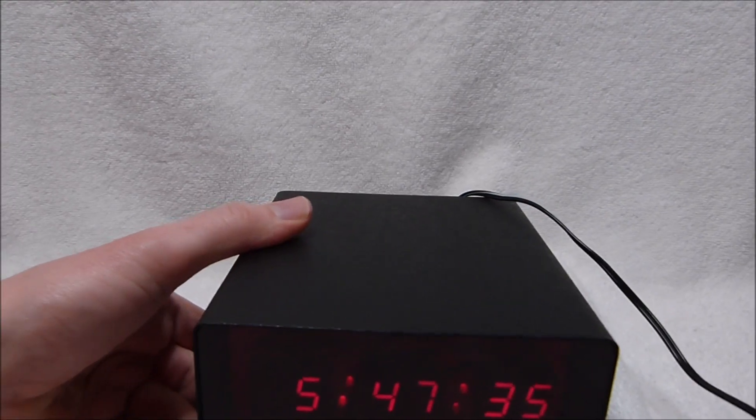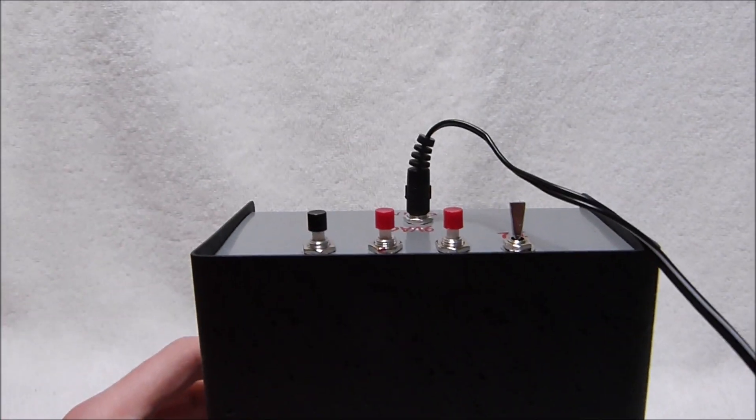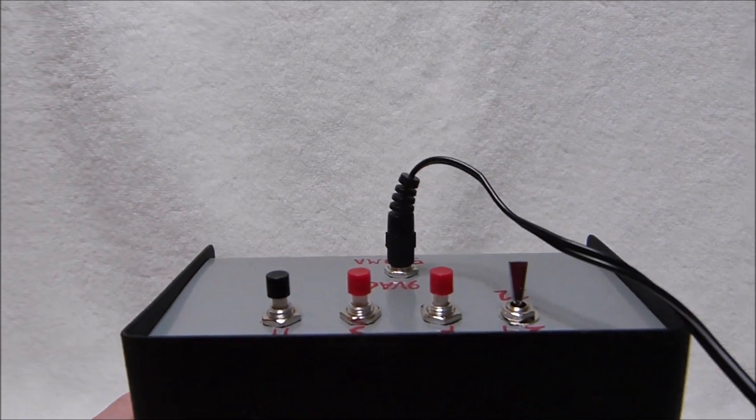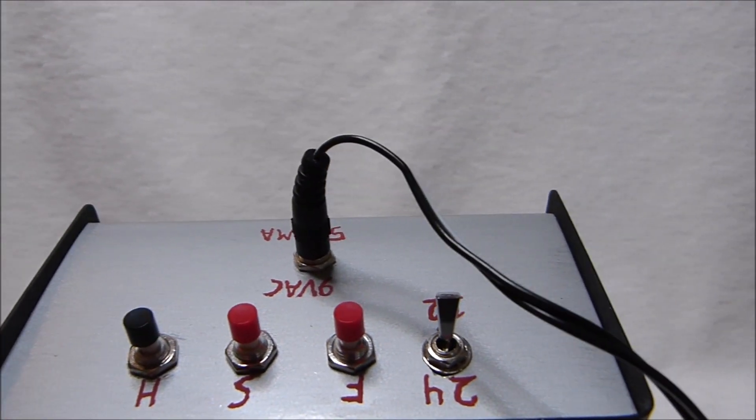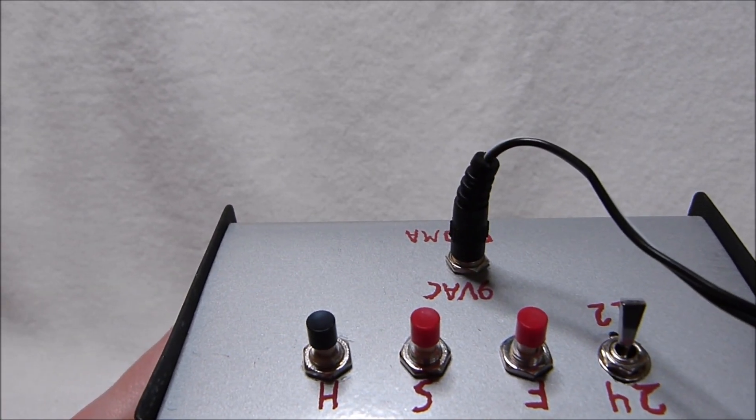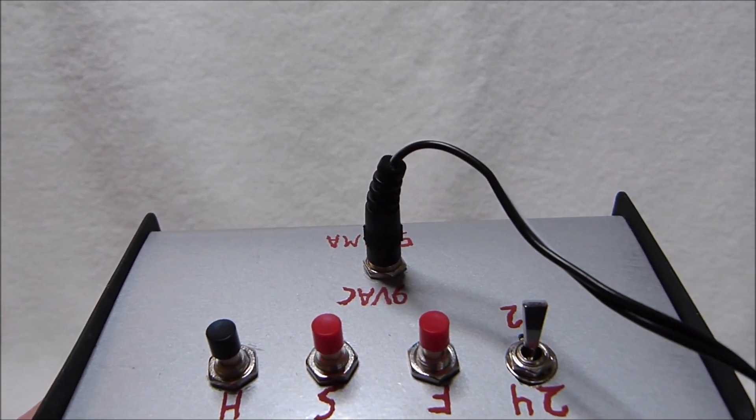The controls of this clock are fairly simple because it uses the classic MM5314N clock chip, which was a very popular choice for building kit clocks and homebrew clocks back in the 1970s.